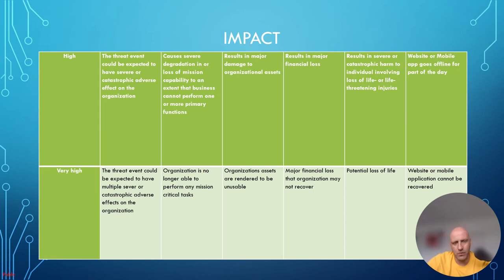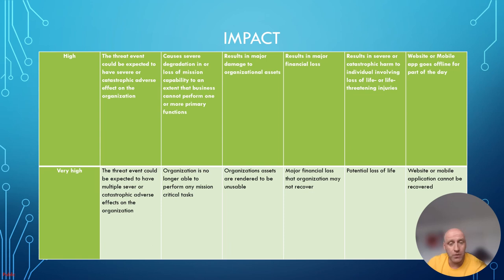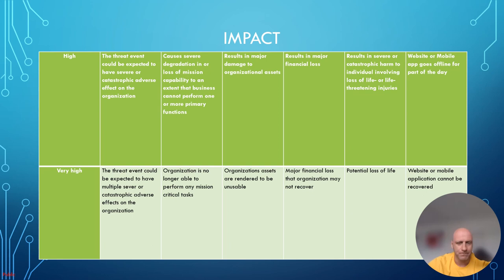Essentially, likelihood multiplied by impact gives us a risk score and rating to evaluate the risk. As covered in part one when we talked about the security bar, when we calculate specific risks from our threat modeling, that will determine what is acceptable to move to the next review process or even into production — whether we can proceed, need to refine the threat model, or need to schedule a penetration test.